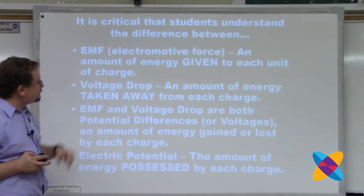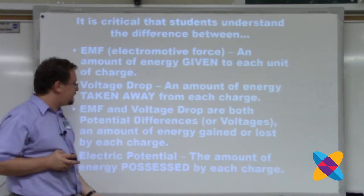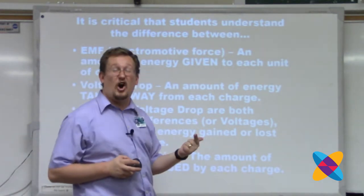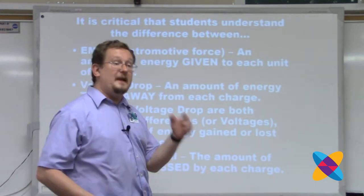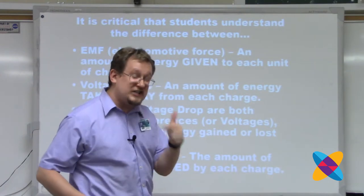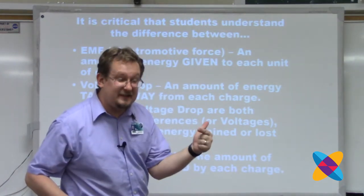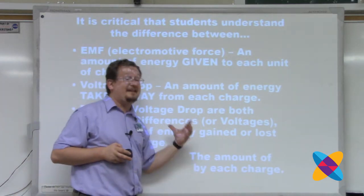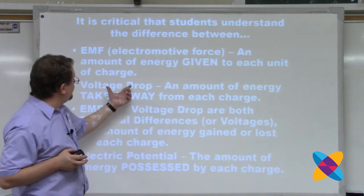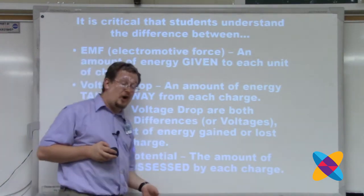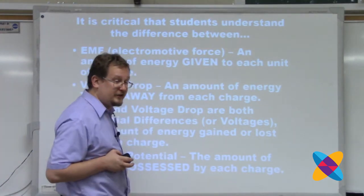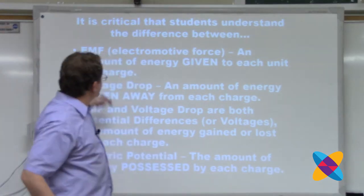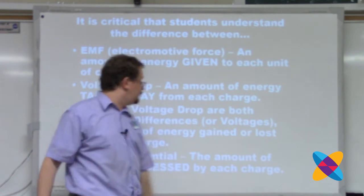EMF and voltage drop are both what are called potential differences. A potential difference is when the amount of energy held by the charges changes. In a battery, the charges get more energy — that's a potential difference. In a resistor, charges lose energy — that's a voltage drop, another example of potential difference. So EMF is a potential difference where the charge gains energy, and voltage drop is a potential difference where the charge loses energy.